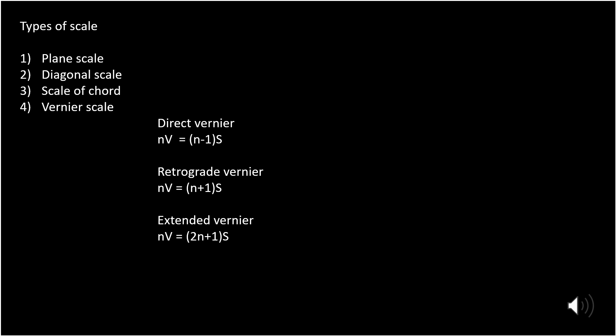In the direct vernier, the division is shorter than the main scale. The formula is: n times of vernier scale is equal to (n minus 1) times of main scale. The reading on the vernier scale increases in the same direction as the reading of the main scale.